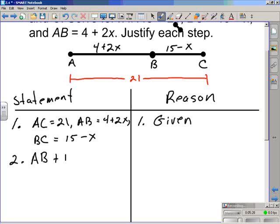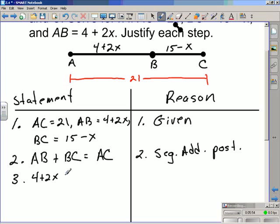The second statement that I make based on the diagram I drew is AB, or the measure of segment AB plus the measure of segment BC is equal to the measure of segment AC. What allows me to do that or allow us to do that, that would be the segment addition postulate. To do proofs you need to know postulates, definitions, and theorems. What I do from here is I write down 4 plus 2x plus 15 minus x is equal to 21.